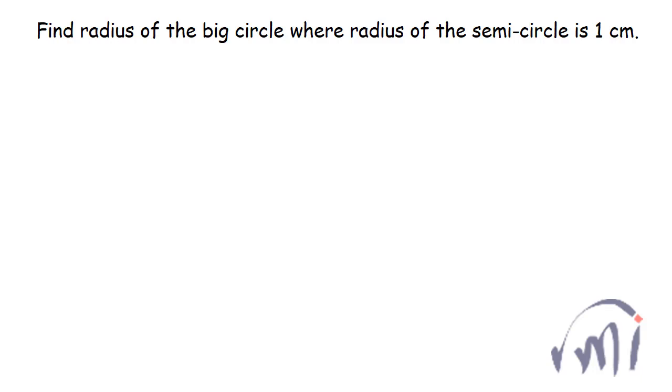Here we have a problem which was sent by one of my viewers. In this we have a square, and then we have a semicircle over it, and then everything is enclosed inside a circle. We have to find the radius of the big circle where the radius of the semicircle is 1 cm. So how to solve this problem?